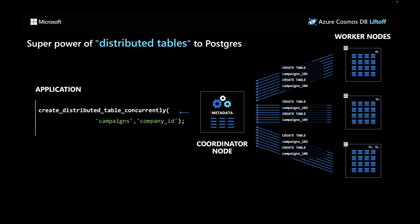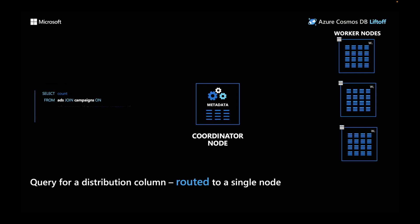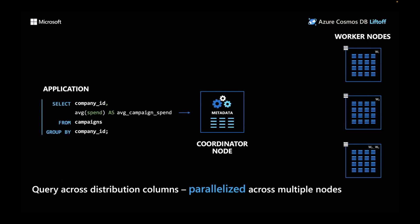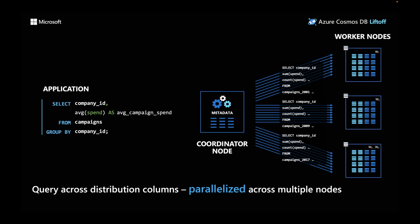To distribute a table — for example, I'm distributing the campaigns table on the company ID using the create distributed table concurrently API — the coordinator decomposes the campaigns table into multiple shards. Shards are plain Postgres tables on the worker nodes that hold a subset of your data. When I run a query for a single company ID, the coordinator automatically routes it to the right worker node. For a query spanning across companies, the coordinator parallelizes it across multiple nodes and pushes work to the workers. The distribution column lies at the heart of how Cosmos DB Postgres efficiently distributes data and executes queries.